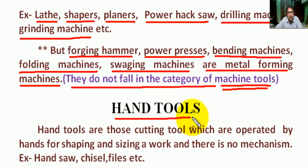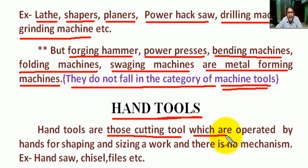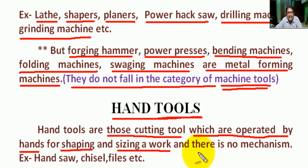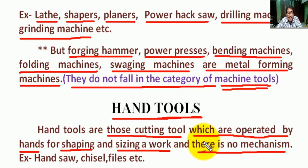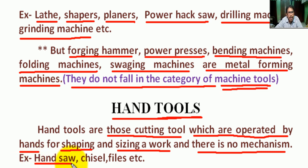Now, what is hand tools? Hand tools are those cutting tools which are operated by hands for shaping and sizing a workpiece, and there is no mechanism involved. A hand tool is held in the hand and operated without electricity or other power — it is manually operated. Examples of hand tools: hacksaw, chisel, file, etc.